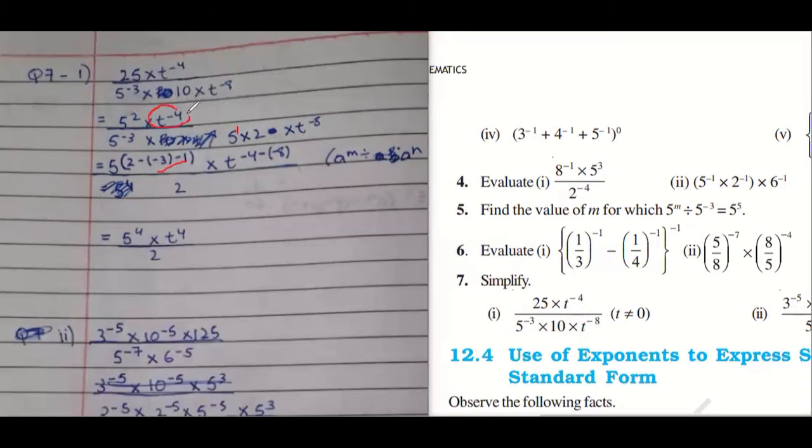Similarly, t power minus 4 was in the numerator. And in the denominator it was power minus 8. Isn't it? Power minus 8. So you subtract.